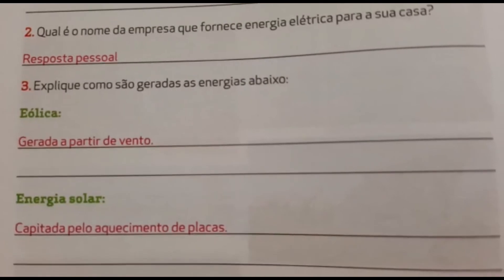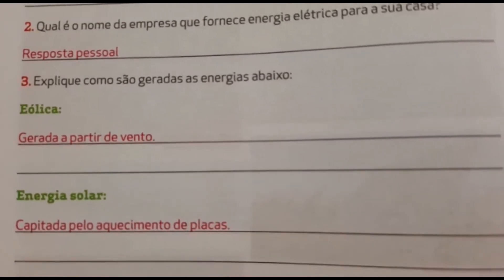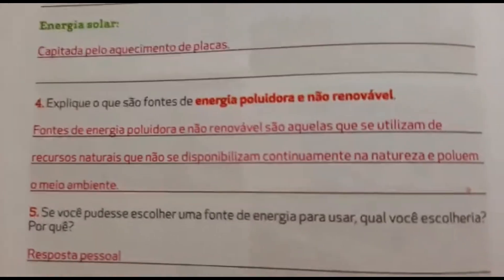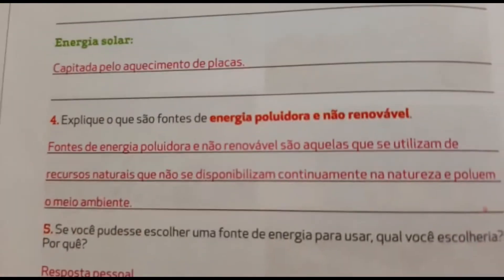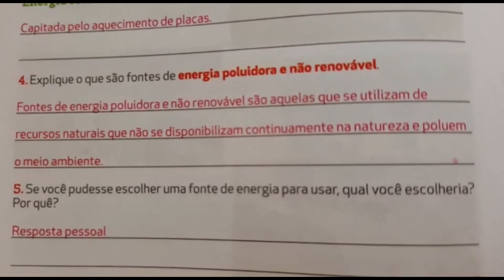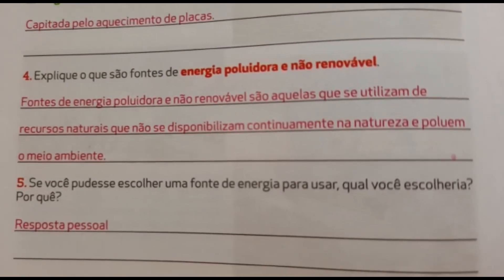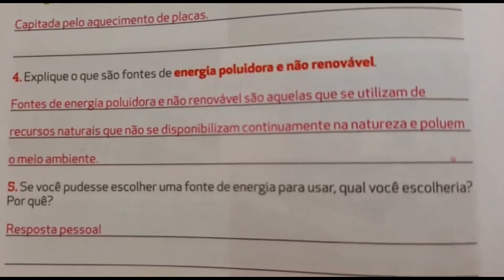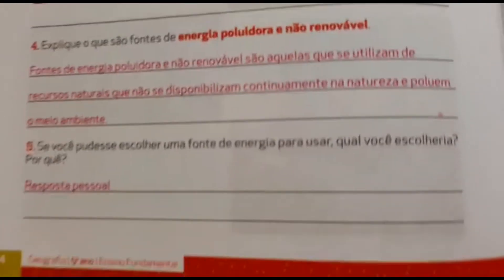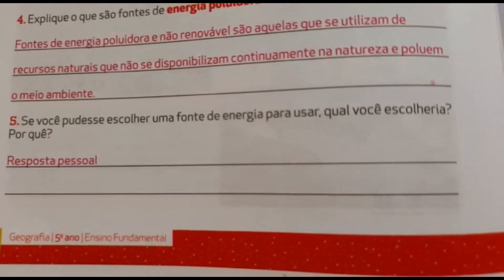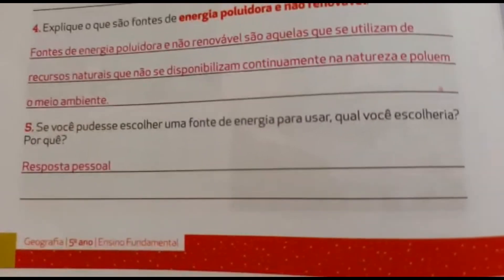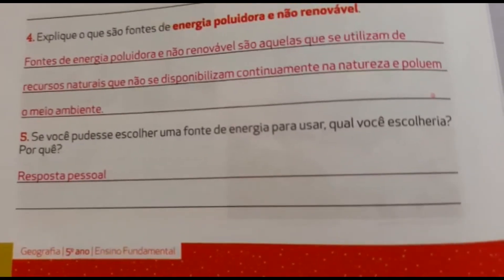Número 3: explique como são geradas as energias abaixo. Eólica é gerada a partir do vento. Energia solar, captada pelo aquecimento de placas. Número 4: explique o que são fontes de energia poluidora e não renovável. Fontes de energia poluidora e não renovável são aquelas que se utilizam de recursos naturais que não se disponibilizam continuamente na natureza e poluem o meio ambiente. Número 5: se você pudesse escolher uma fonte de energia para usar, qual você escolheria? Por quê? Resposta pessoal. Façam direitinho, que quando voltar, a tia dá o visto.